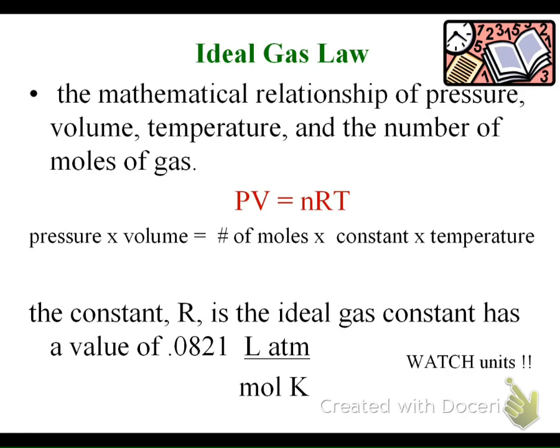The ideal gas law is the mathematical relationship of pressure, volume, temperature, and the number of moles. We're going to use all four qualities of a gas. Pressure times volume equals number of moles times a constant times temperature. You'll often hear teachers refer to this as PV=nRT.